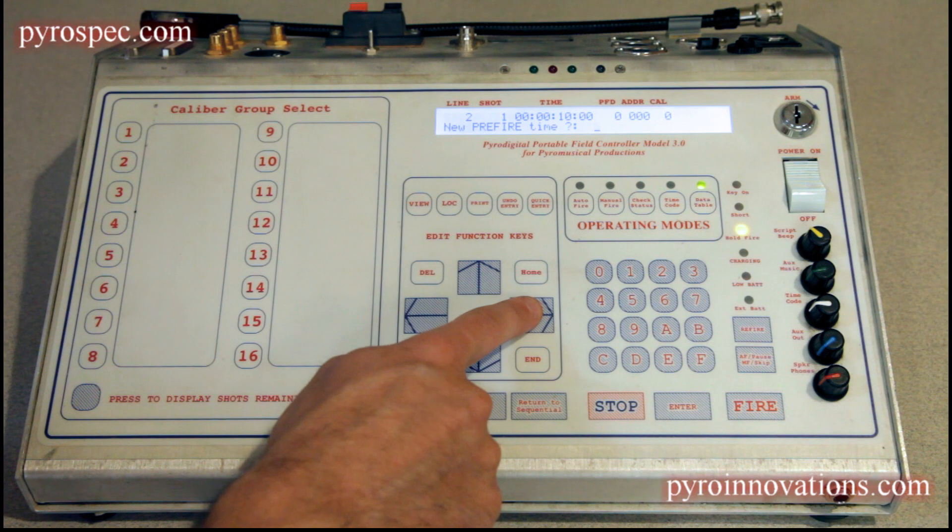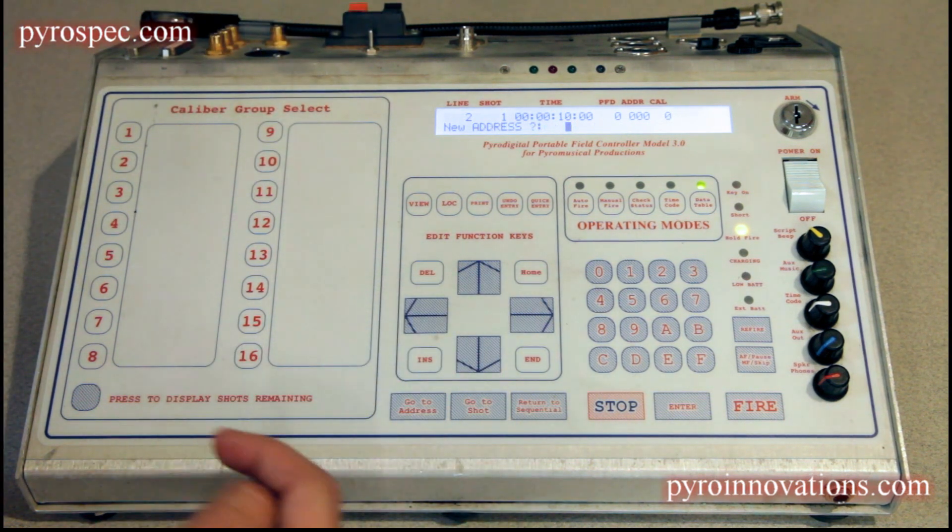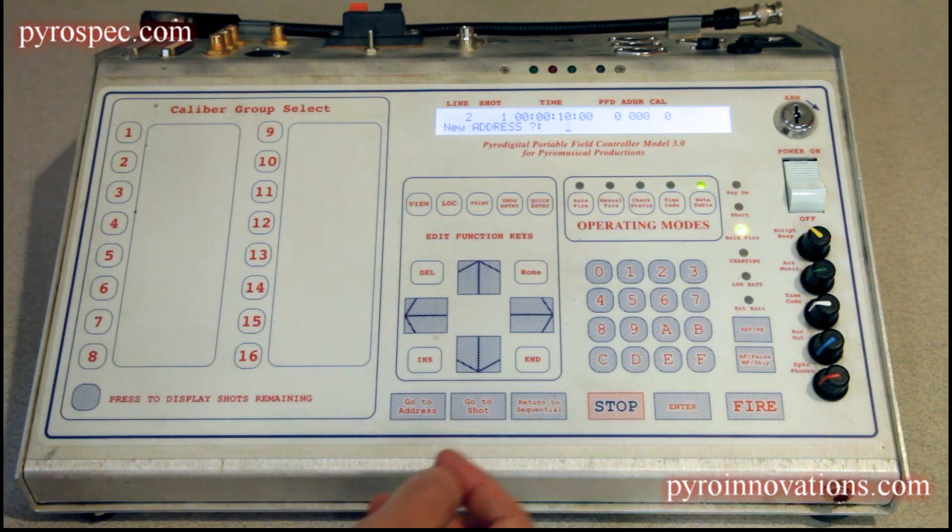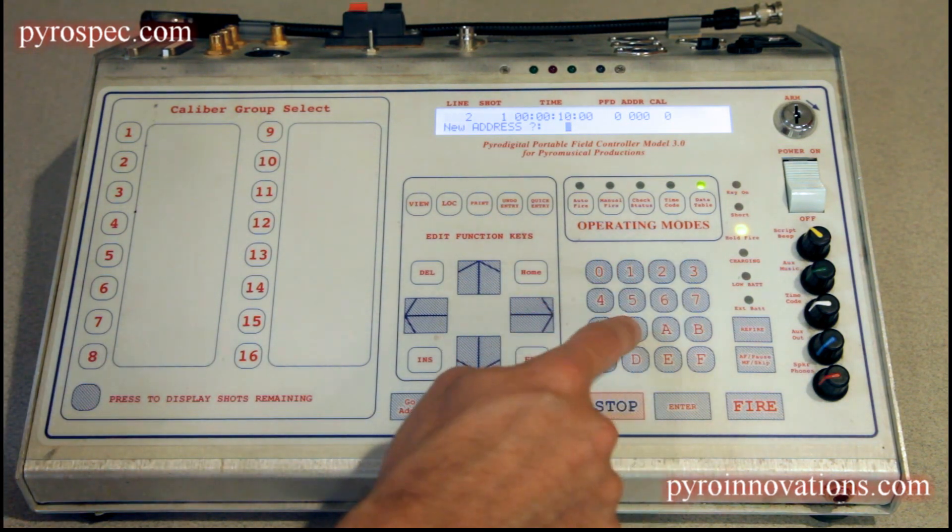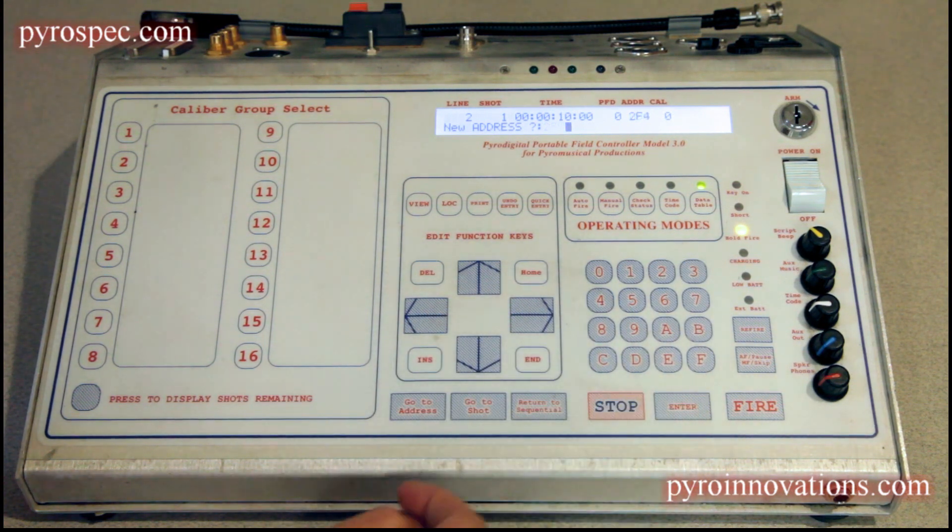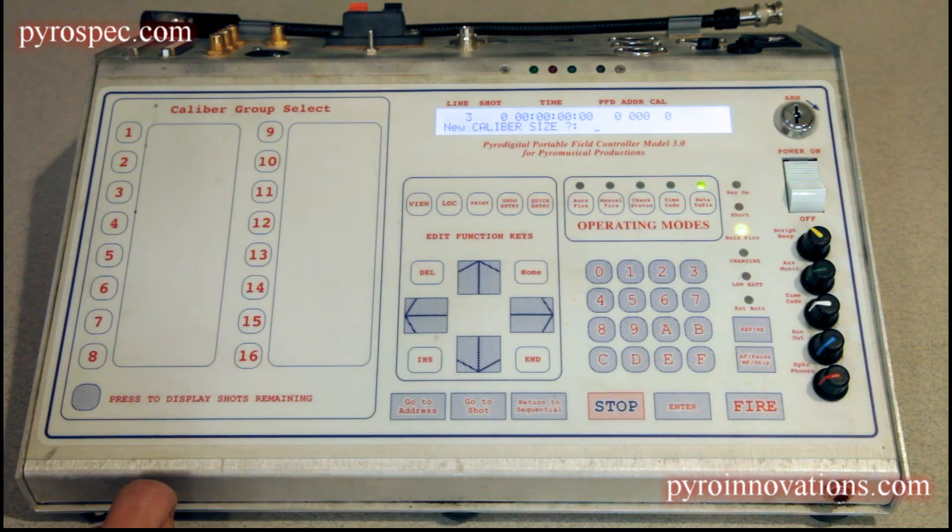We scroll over. We want our pre-fire time to be zero, which it is by default. The address is going to be 2F4 since we're talking about position two. So 2F4, enter. We have address 2F4 now. Now we're going to go to line three.